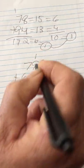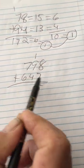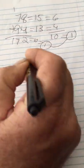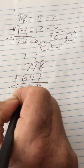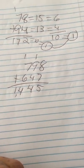8 plus 7 is 15, carry the 1. 9 plus 1 is 10, plus 4 is 14, carry the 1. 7 plus 1 is 8, 8 plus 6 is 14. For a grand total of 1,445. Now let's do the same thing we had done before.